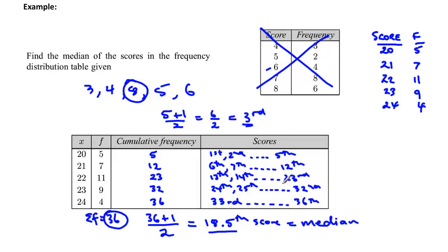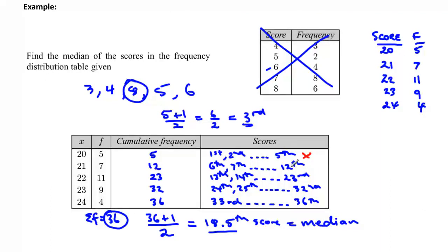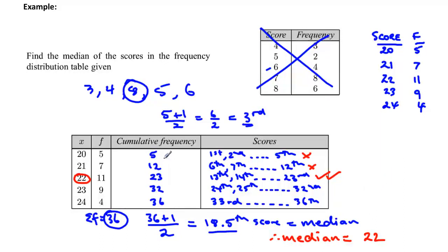We need to find where the 18.5th score falls. The first group goes to the 5th score — not there yet. The second group goes to the 12th score — not there yet. The thirteenth to twenty-third score falls in the group with a score of 22. Therefore we know that the median must be equal to 22. You need to practice this and can review it by going over the video again.